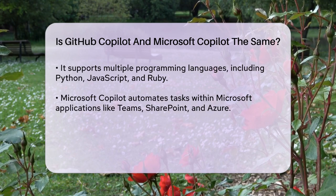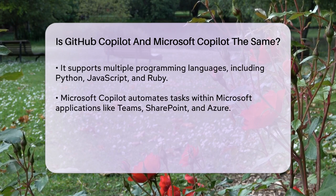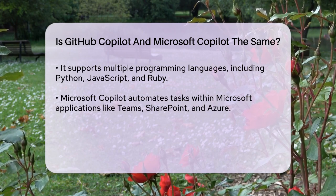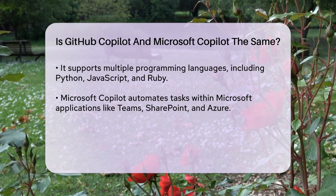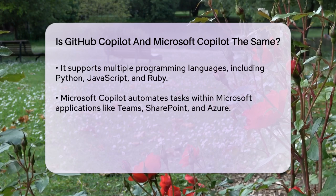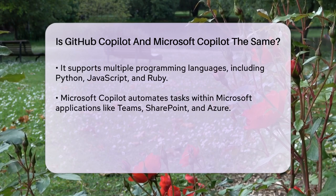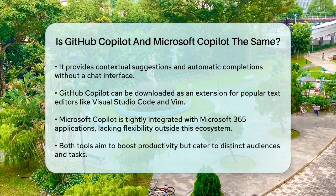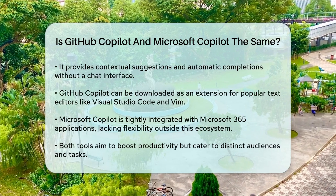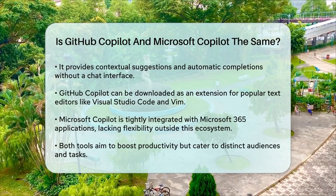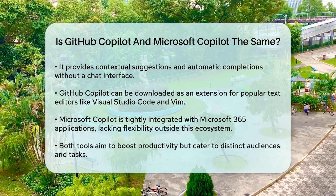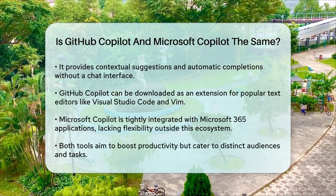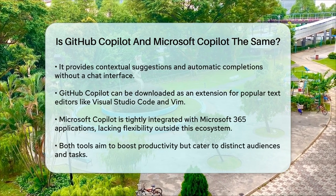In terms of integration, GitHub Copilot can be used as a downloadable extension for popular text editors like Visual Studio Code, Vim, and the JetBrains IDE suite. This makes it adaptable to a developer's preferred workflow. Microsoft Copilot, however, is tightly integrated with Microsoft 365 applications and doesn't offer the same level of flexibility outside this ecosystem.